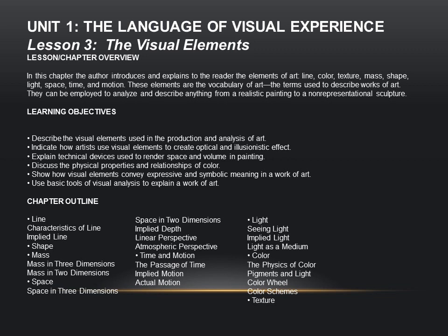The objectives for this lesson are to describe the visual elements used in the production and analysis of art, indicate how artists use visual elements to create optical and illusionistic effect, explain technical devices used to render space and volume in painting, discuss the physical properties and relationships of color, show how visual elements convey expressive and symbolic meaning in a work of art, and use the basic tools of visual analysis to explain a work of art.